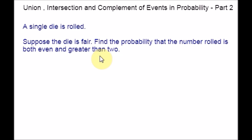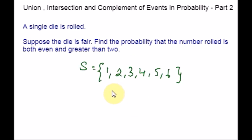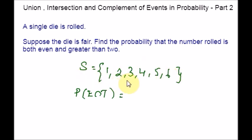First, list out the sample space. When you are rolling the die, you will get 6 faces — any one among the 6 faces. The sample space would be {1, 2, 3, 4, 5, 6}. This question asks us to find the intersection of E (even numbers) and T (greater than 2). From the list, the even numbers are 2, 4, and 6. Among these three outcomes, the numbers greater than 2 are 4 and 6. So E ∩ T = {4, 6}. Since the die is fair, all outcomes are equally likely. By counting, we have two outcomes out of the total six, so the probability is 2 over 6.